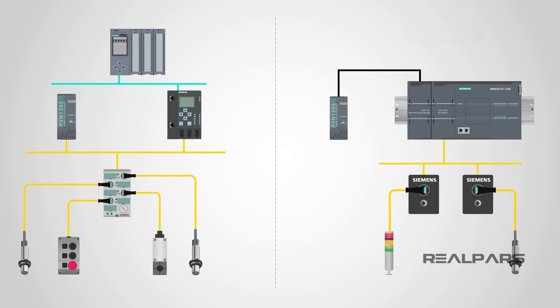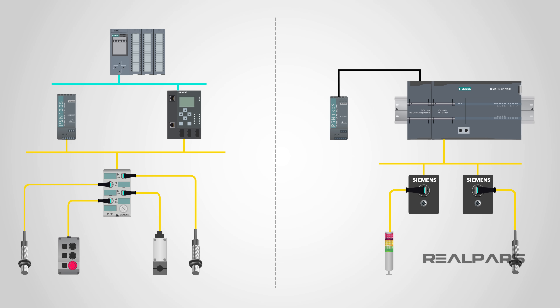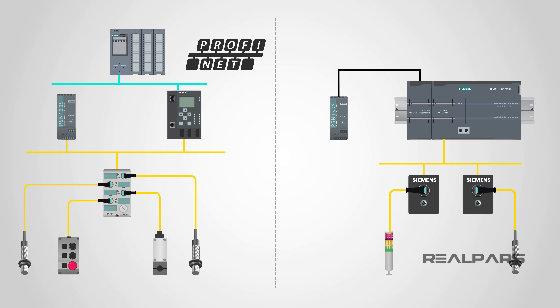They can be connected directly to a programmable logic controller via an AS Interface master in the PLC rack. Alternatively, they can be part of a larger subsystem, and connected to a programmable logic controller via fieldbus connection, such as PROFINET or PROFIBUS.